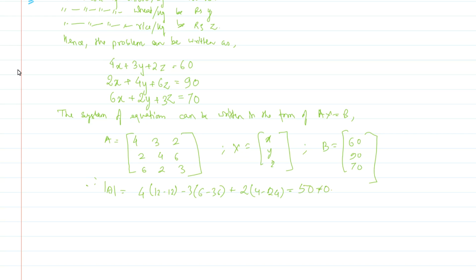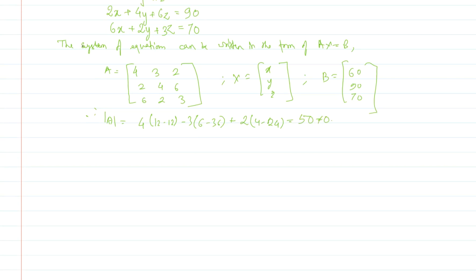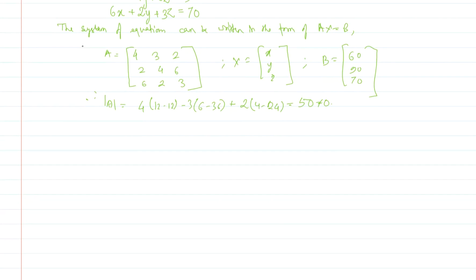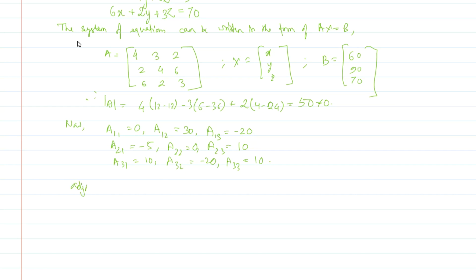Since the solution exists and A is consistent, we need to find A inverse. For A inverse we find the adjoint of A, and for that we find the cofactor matrix. A₁₁ = 0, A₁₃ = -20, and similarly for all cofactors. The adjoint of A — the transpose of the cofactor matrix — is [0, -5, 10; ...]. So A inverse = (1/50) times the adjoint.